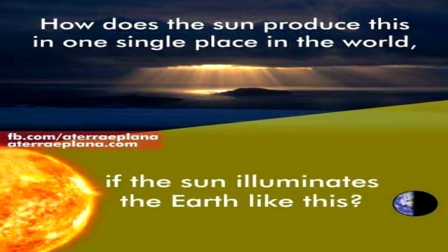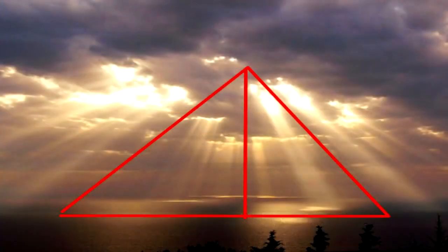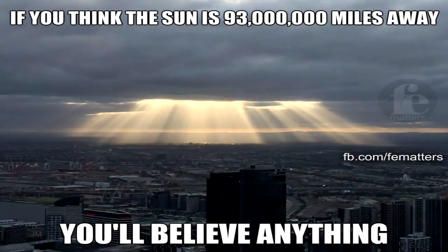Eratosthenes' calculations were made assuming the sun to be millions of miles away so that its rays would fall perfectly parallel, even at points as divergent as Syen and Alexandria. Anyone familiar with the phenomenon known as crepuscular rays, however, knows full well that the sun's rays simply do not fall perfectly parallel, especially at such distant points, rendering the entire argument moot.